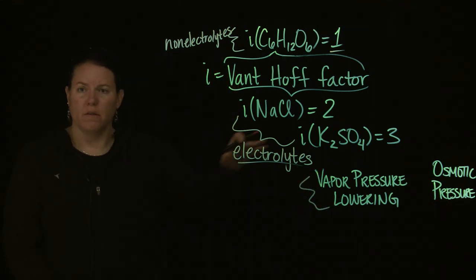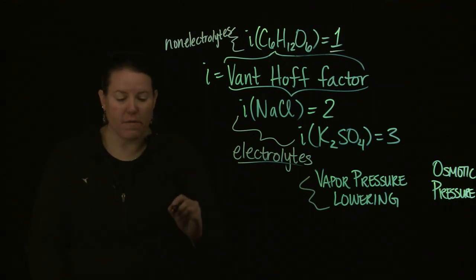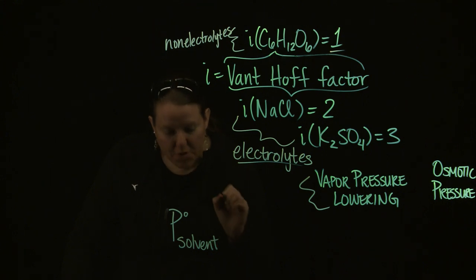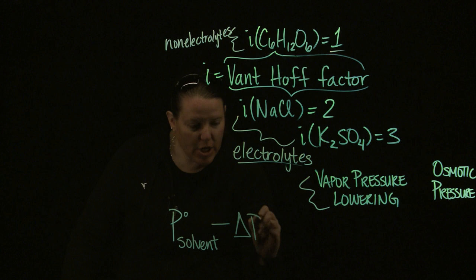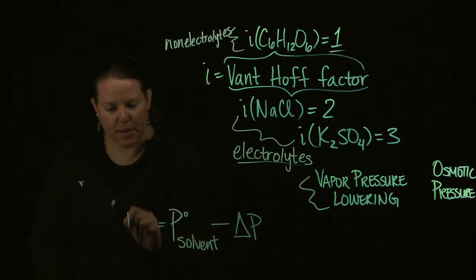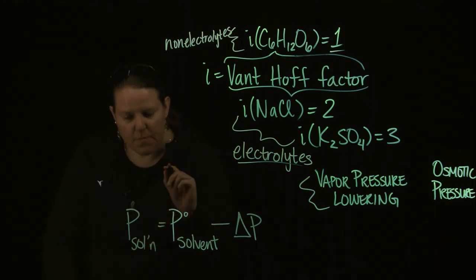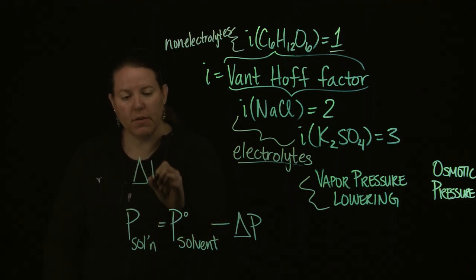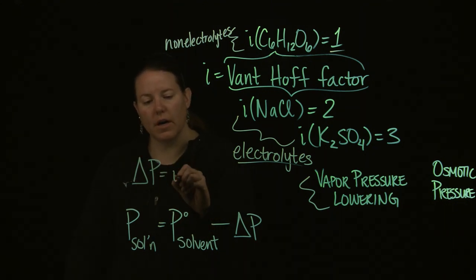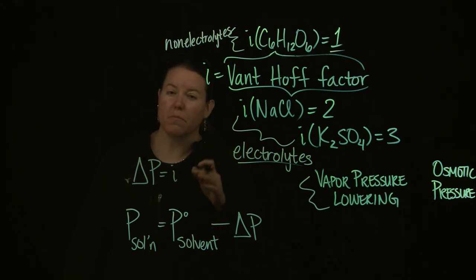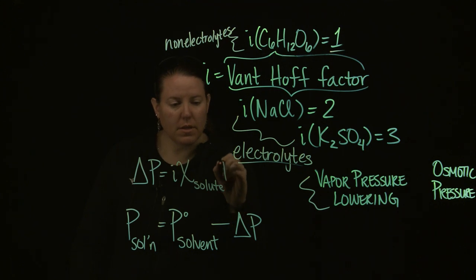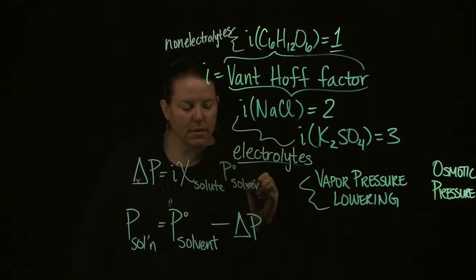For vapor pressure lowering: the original pressure of the pure solvent has to have a change subtracted out based on the solution, because it's a lowering — that gives the pressure of the solution. If you want to incorporate i, the change in pressure ΔP = i × χ(solute) × P°(solvent), where P° is the pressure of the pure solvent.